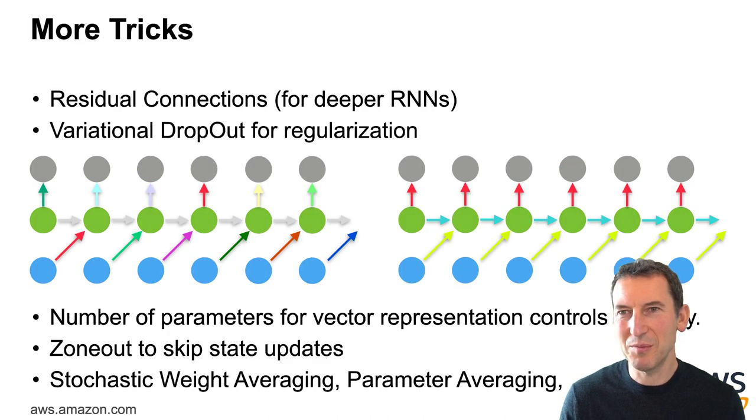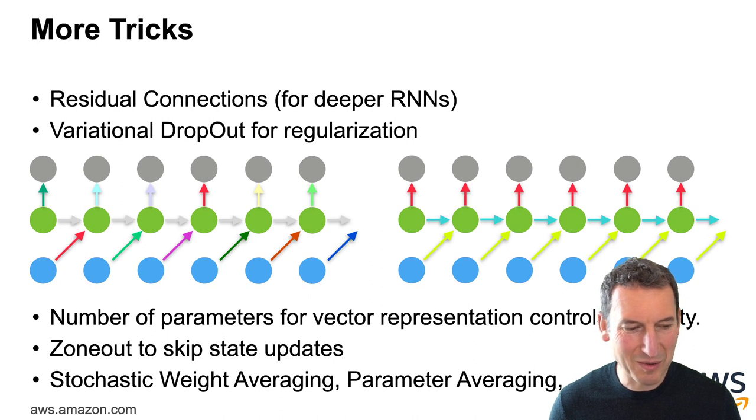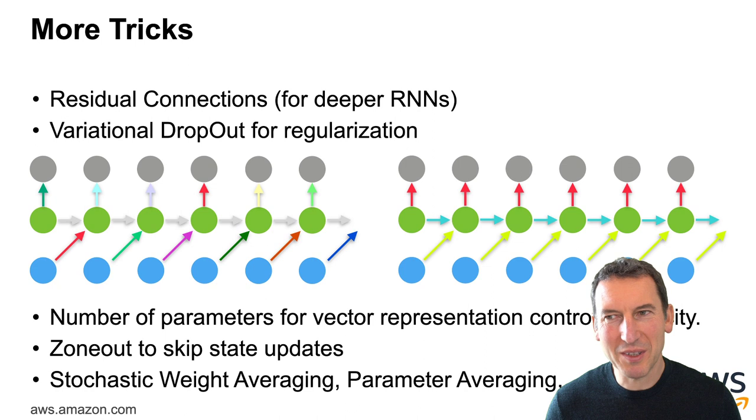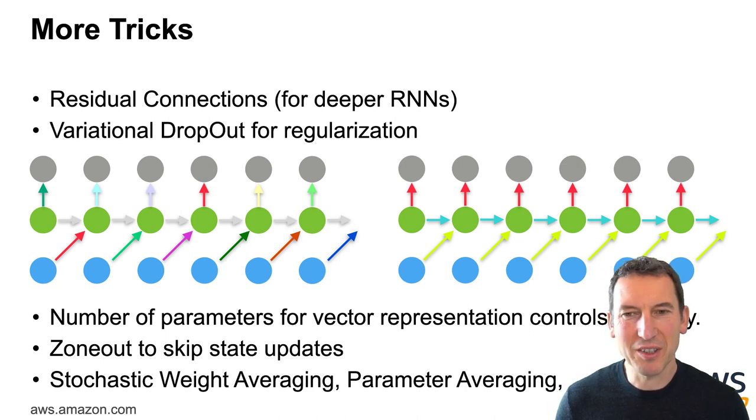By the way, there are lots more tricks for dealing with recurrent neural networks, as said, residual connections. There's also variational dropout for regularization. So the idea is you don't just omit some parts of your MLP for a single neuron, but you actually do that for the entire sequence. The variational is kind of a red herring there. It's really dropout where you tie terms.